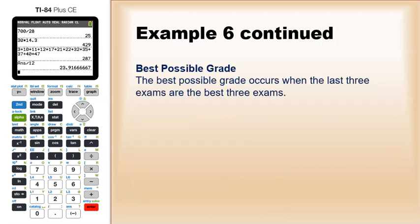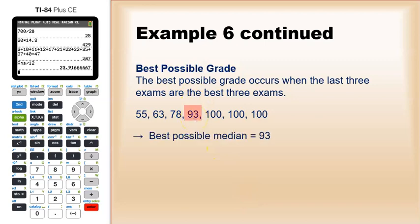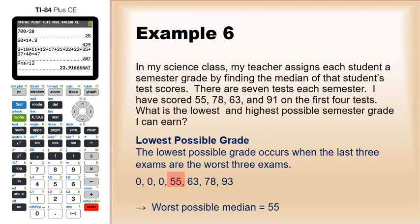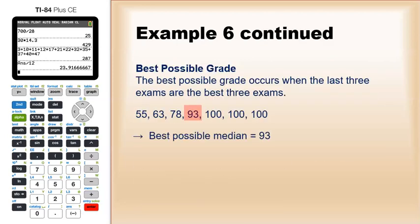Now if I want to figure out the best possible grade, that would occur when your last three exams are your best three. So let's take that data set and let's say our last three tests were all hundreds. Well, in that case, the middle number would be a 93. So overall, you can score anywhere from 55 to 93, depending on how you do on your last three tests.